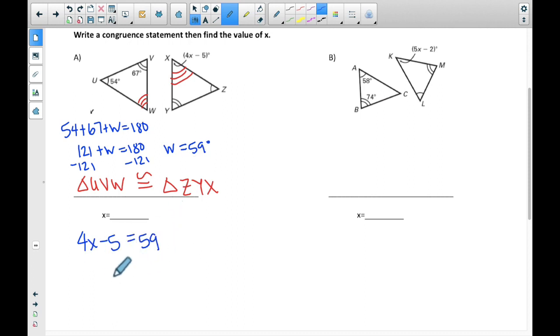So 4X minus 5 equals 59. So now I just need to solve this one to come up with my final answer. And so I add 5 to both sides, I get 64, I divide by 4, and that gives me X equals 16.